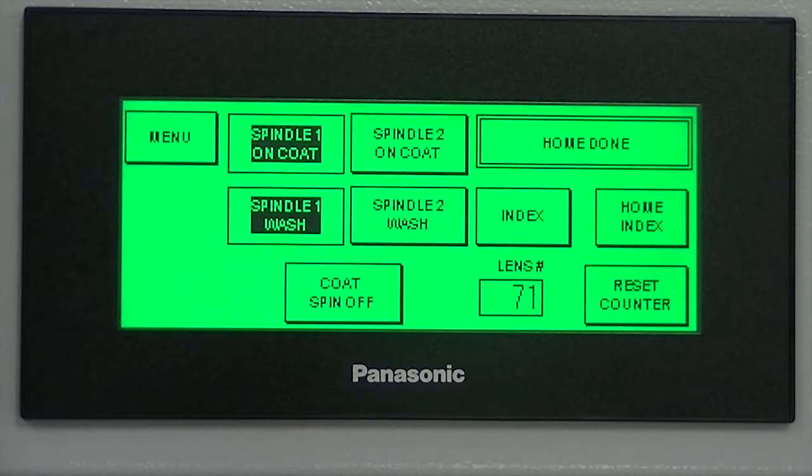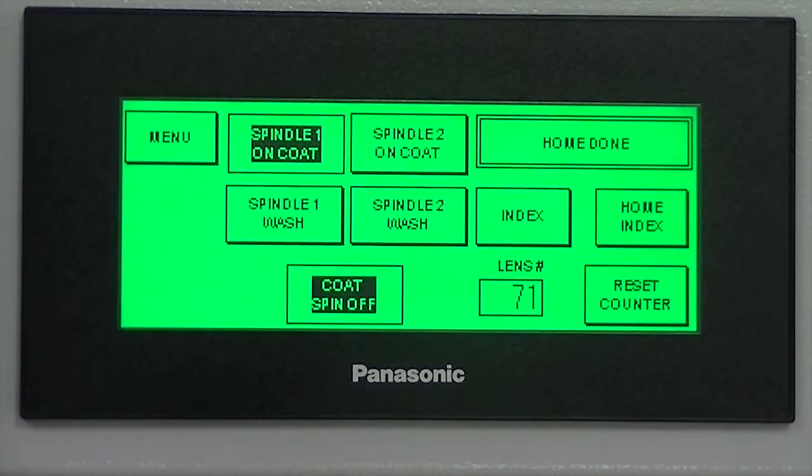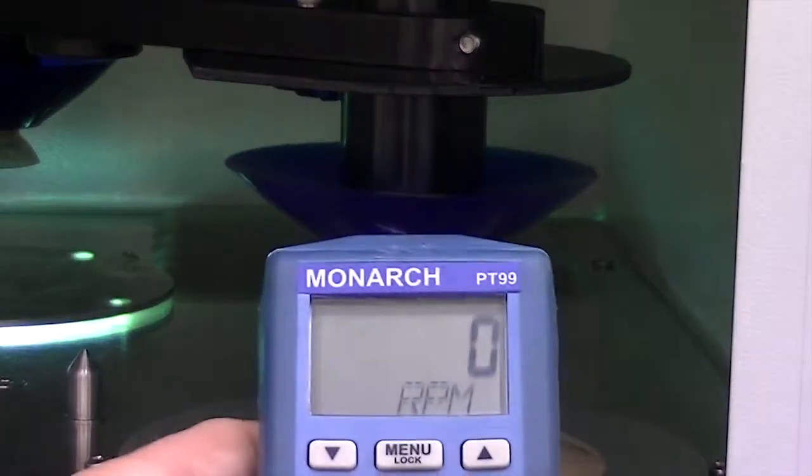Unselect the option for wash speed and with spindle on still selected, press the option for coat to be adjusted to the first spin off. Point the tachometer at the reflective tape and hold in the button on the top.